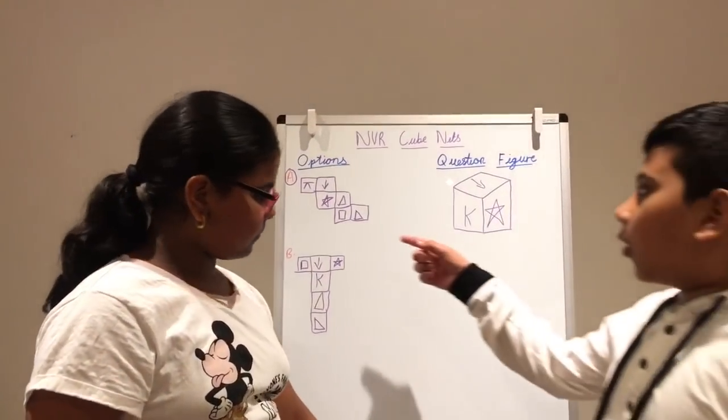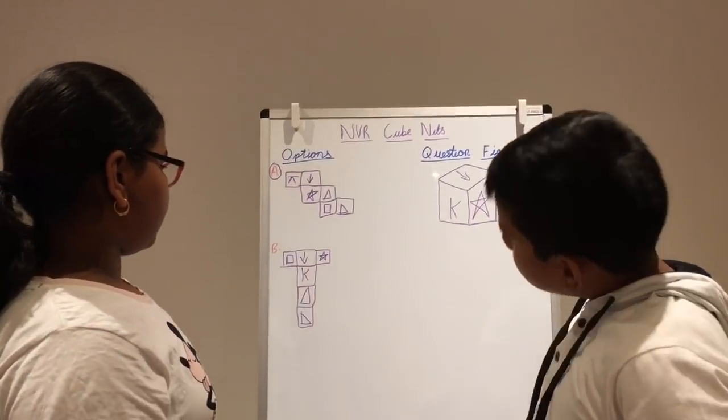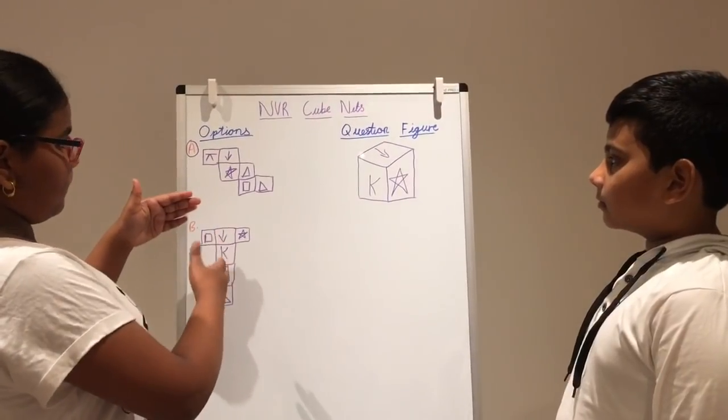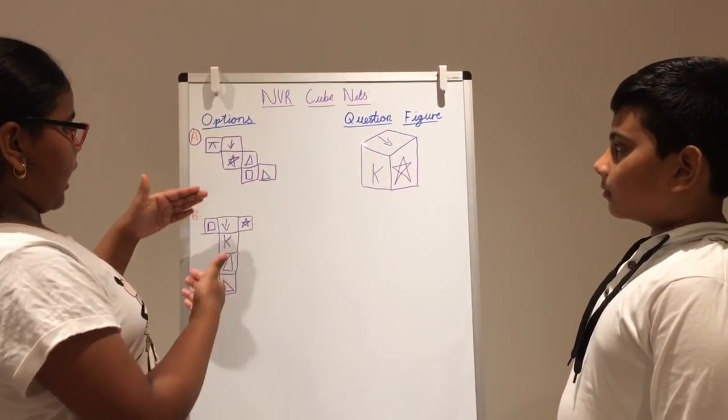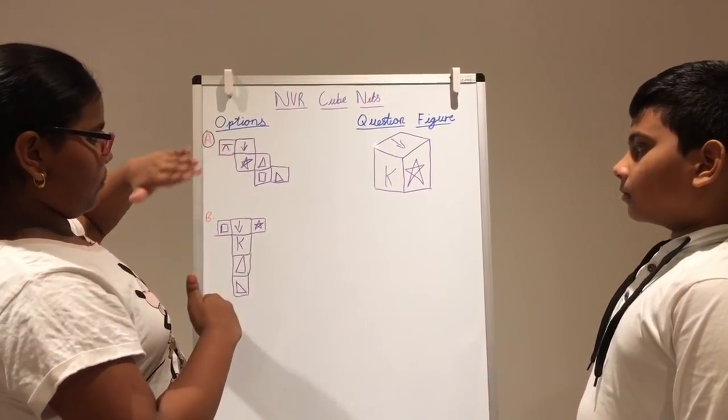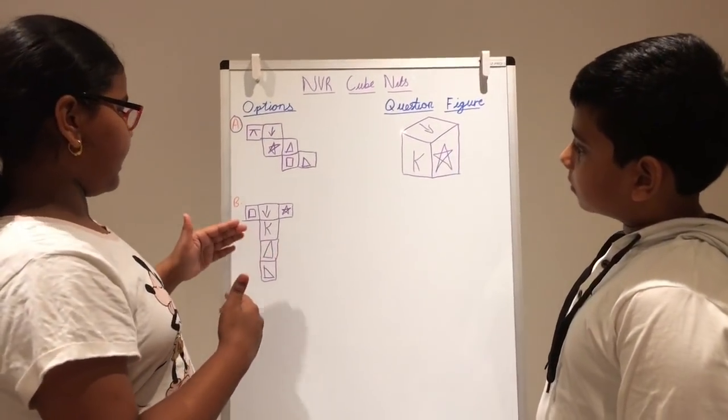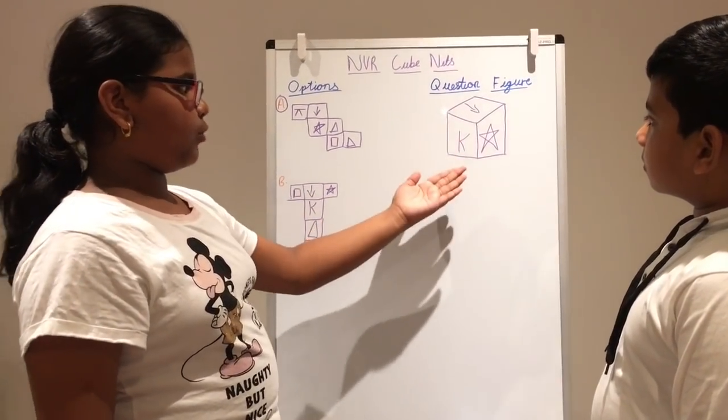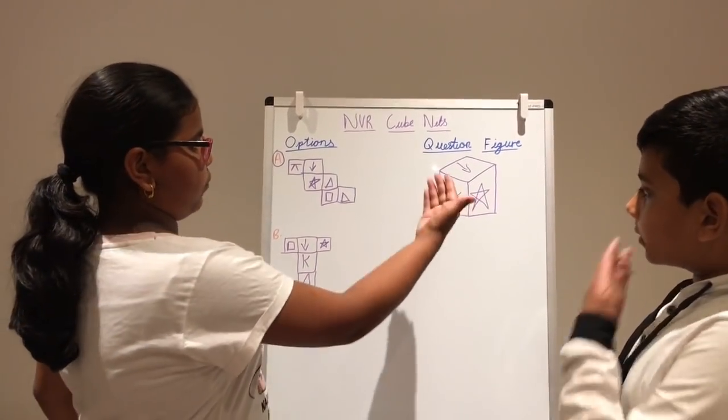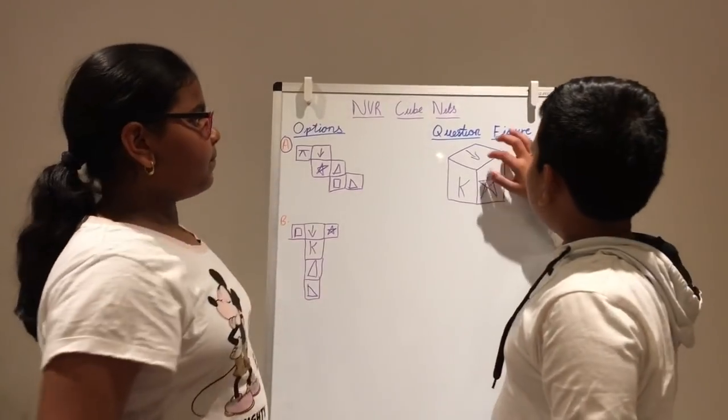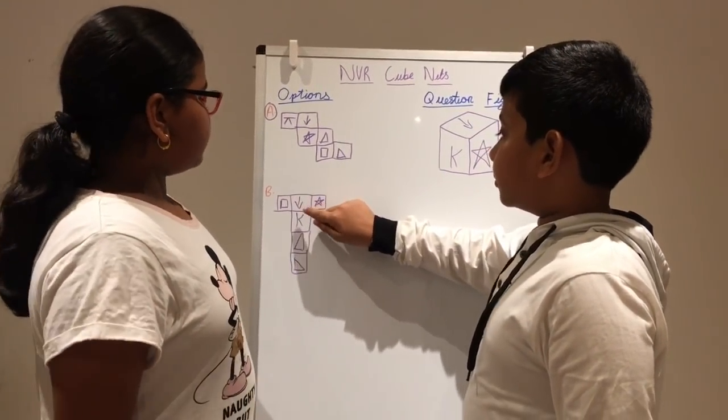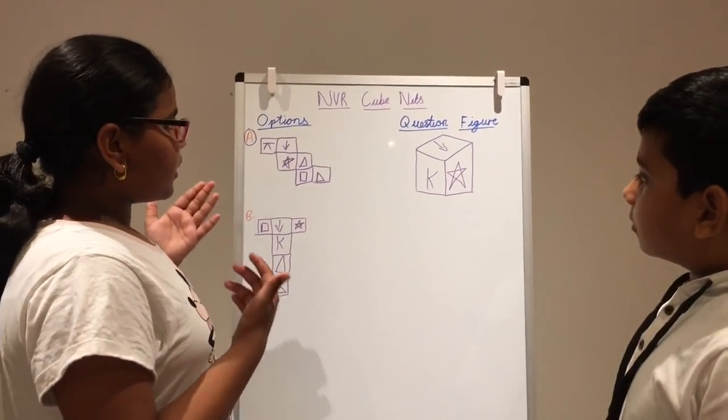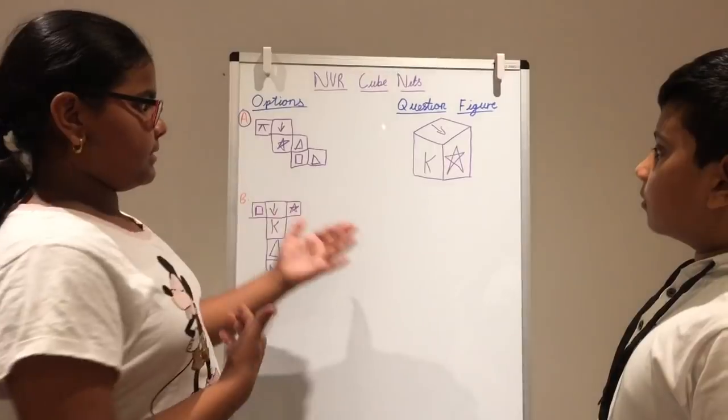Now, how are you sure it's option A? Why can't it be option B? Option B, because if you turn the arrow figure, which will be flat on the top, and the K would be right in front of the arrow, where it's pointing, like, where the star is. Oh! So, the arrow should be pointing the star, but it's pointing the K. Yes. That's why I didn't choose option B as my answer.